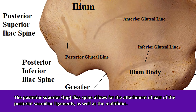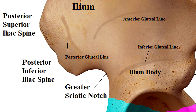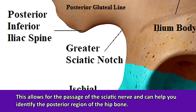Below that we have the posterior inferior iliac spine. Pay attention to those directional terms because that's what a lot of these structures are named after — posterior means towards the back, inferior means away from the head or toward the feet. Just under the posterior inferior iliac spine, you'll notice a huge notched-out area called the greater sciatic notch, which allows for the passage of the sciatic nerve. This notch will help you identify the posterior region of the hip bone.